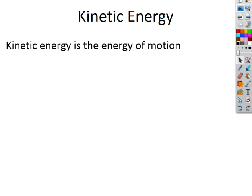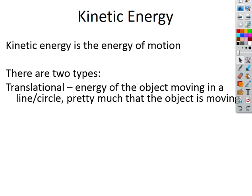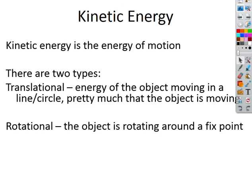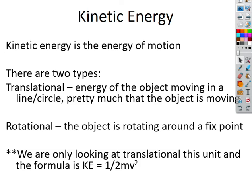The idea of kinetic energy — it is the energy of motion. We will eventually get to two types. We've primarily only looked at translational kinetic energy — the energy where you're moving in a straight line. The other type is rotational kinetic energy, the energy caused by an object spinning around a fixed point. In this unit, we are only going to look at translational, so the only formula we're interested in is KE = ½mv².